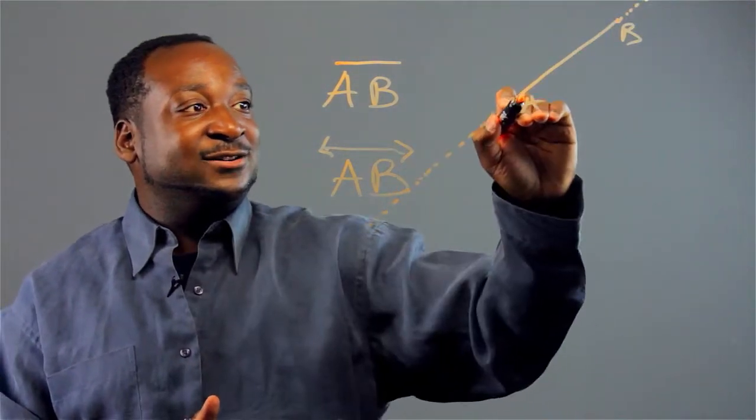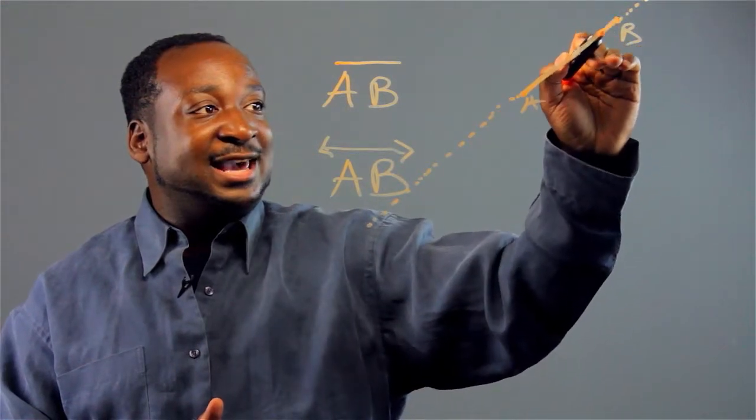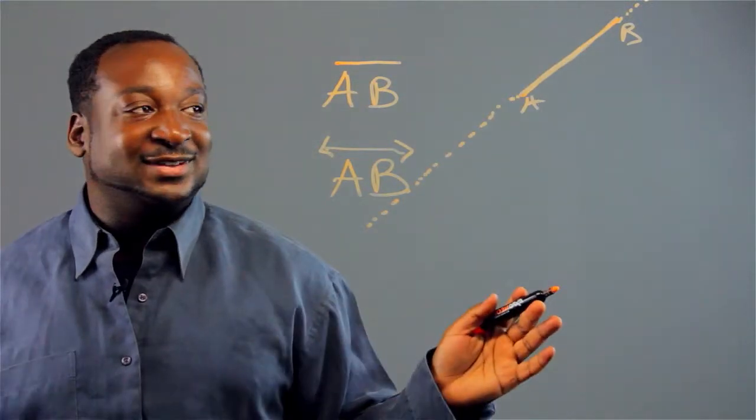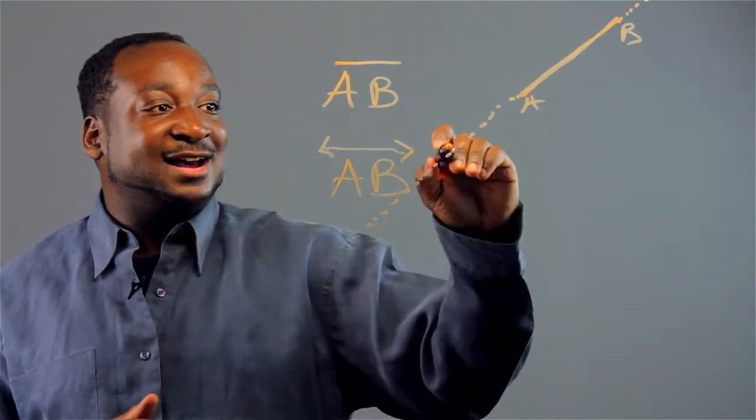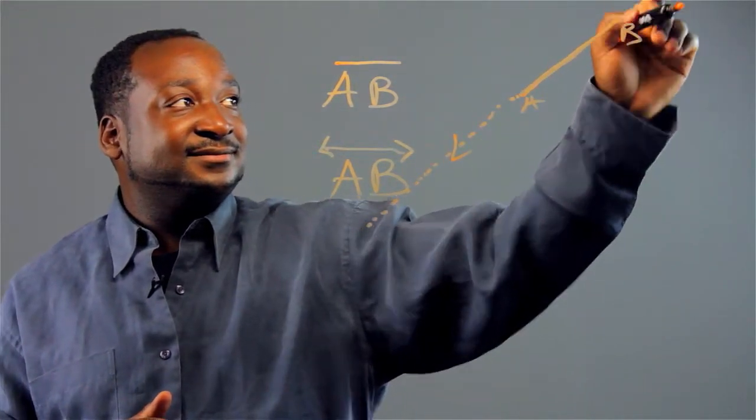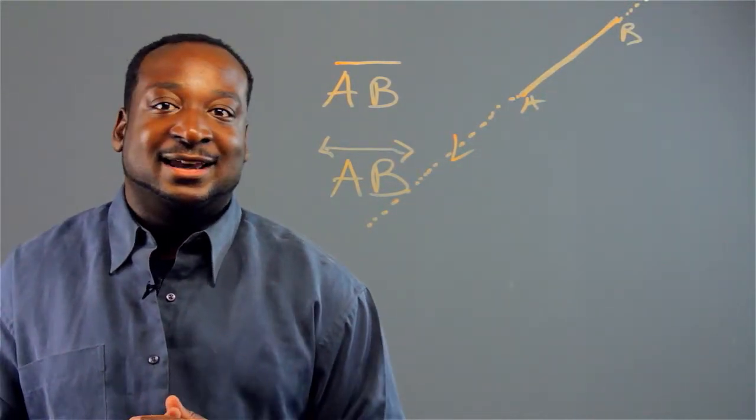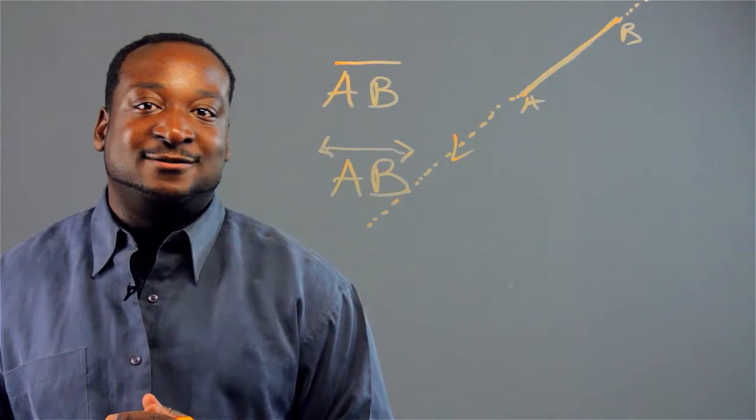So, this small portion will be line segment AB, and this entire segment, going off to infinity, that's our line AB. And those are basic symbols used in geometry.